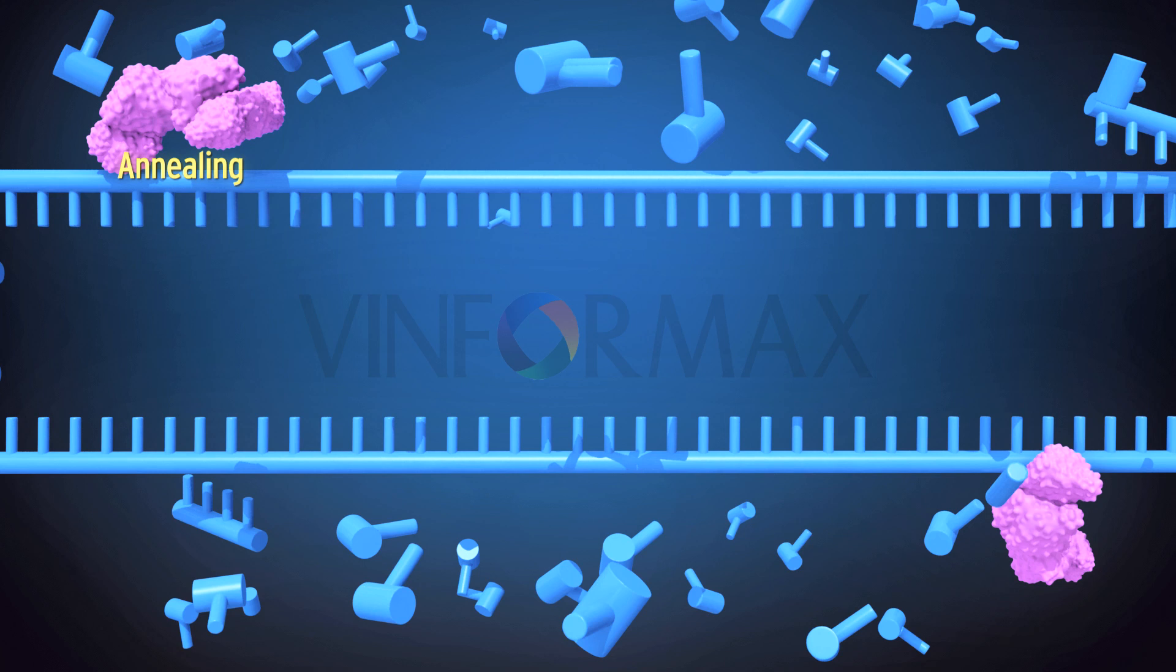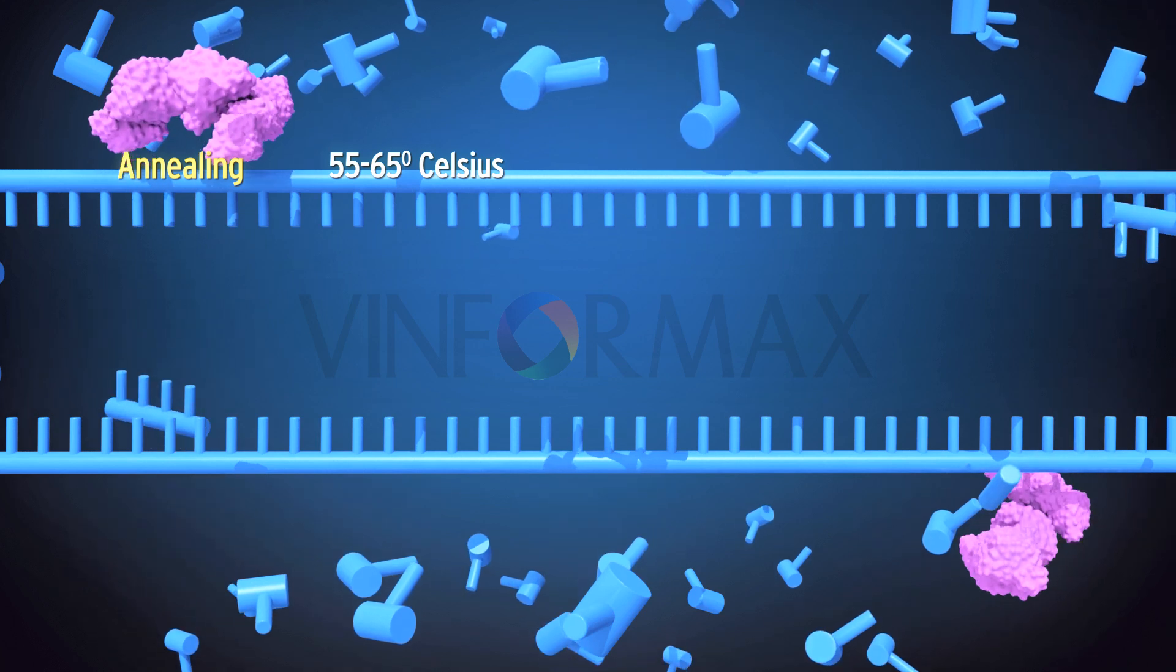Annealing: this process occurs at 55 to 65 degrees Celsius. The forward and reverse primers bind to the two separated strands.